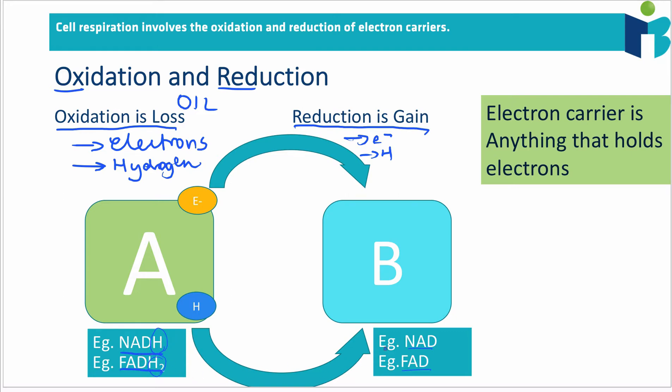Therefore, we can say that NADH turns into NAD when it is oxidized, and NAD turns into NADH when it is reduced, because when it gains an electron or a hydrogen, then it turns back into its original product.